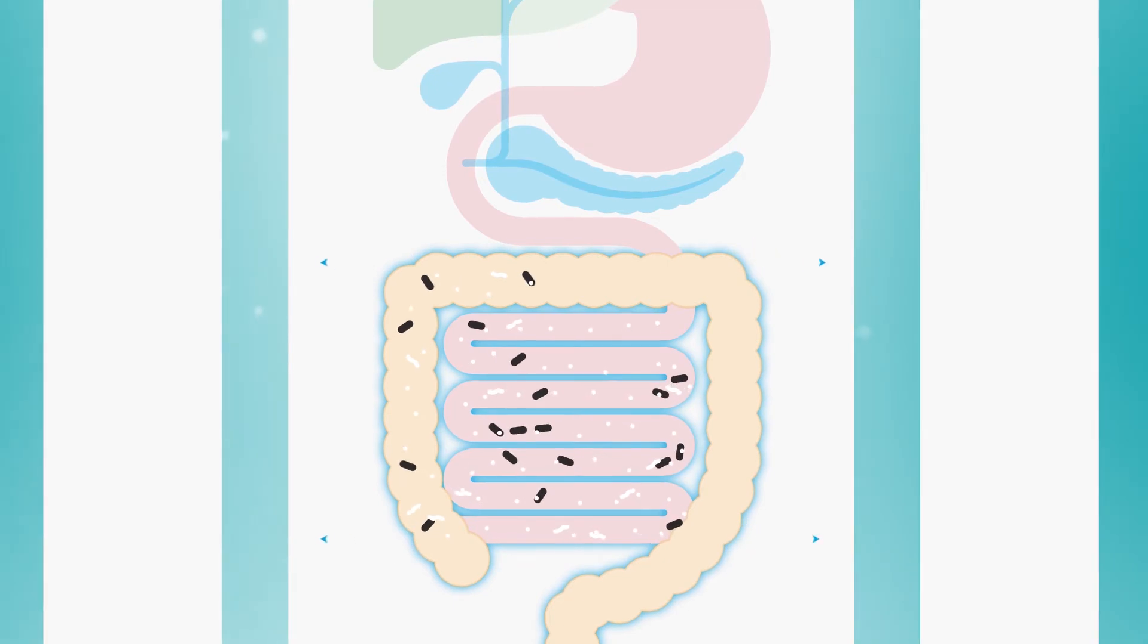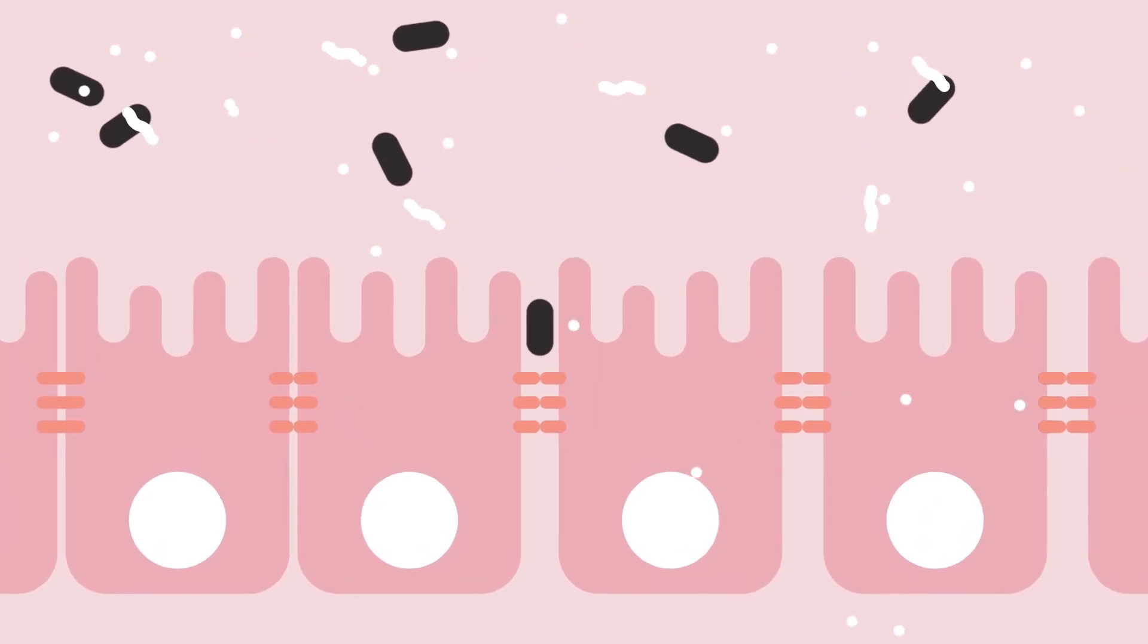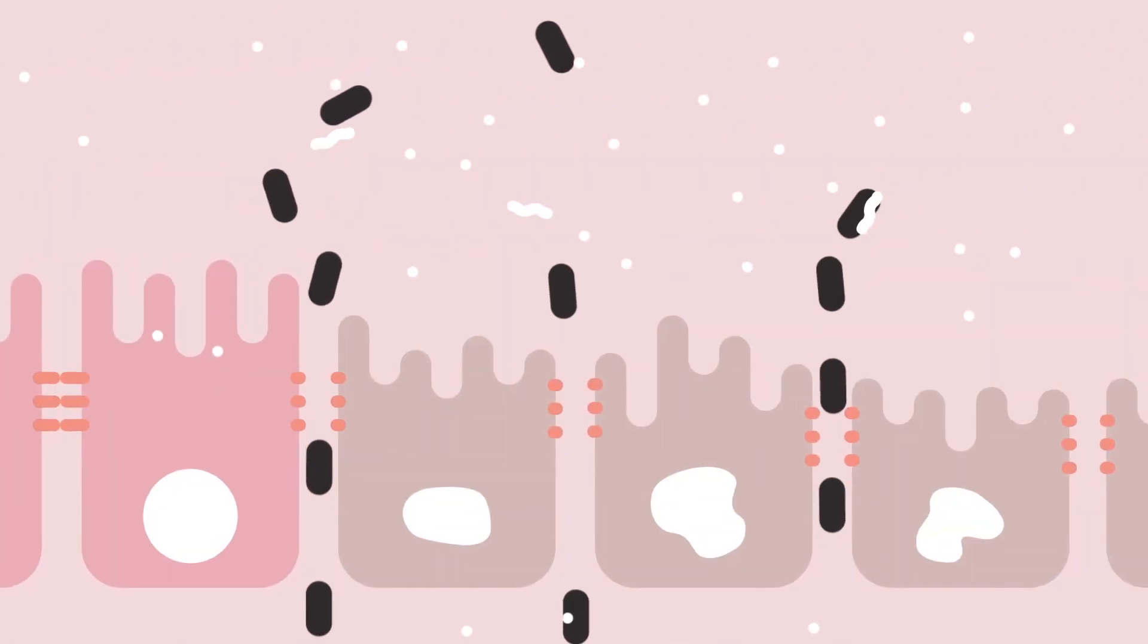It is the job of the 500 square meter intestinal wall to feed nutrients into the body in a controlled manner but this barrier can become leaky. This is known as leaky gut syndrome.